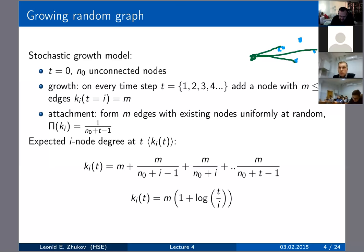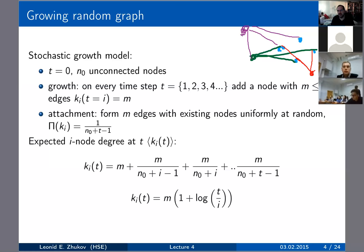As the network grows, every node will eventually have a degree higher than m, because in addition to its initial m edges, newly arriving nodes can also connect to it. We're treating this as an undirected network. The boundary condition is: when node i joins the network at time t=i, its degree k_i equals m.